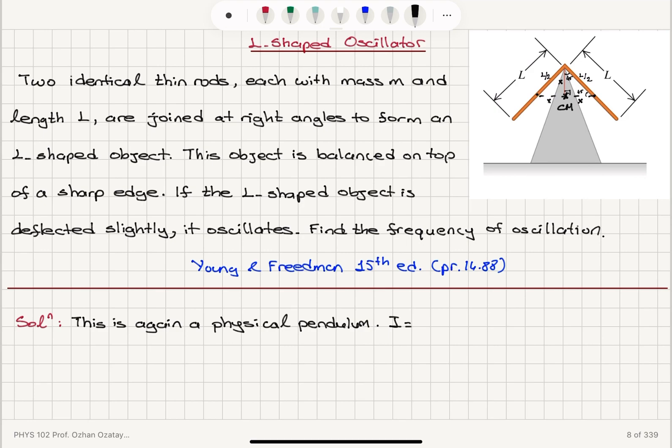Since we have two rods, we have twice the contribution. 2 times ML squared over 3 will be the total moment of inertia for rotations around the corner axis. You can see the same thing we did in problem 1473.